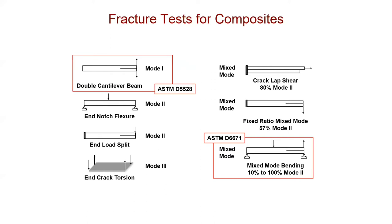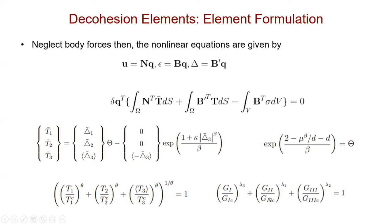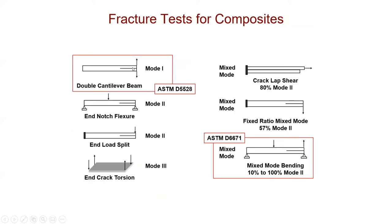To really be able to use any of this, you need G1C, G2C and G3C. You need to get these fracture toughnesses, and one way to get them is through ASTM standards. ASTM D5528 helps you measure the fracture toughness for mode one G1C using the double cantilever beam. You can also use a mixed mode fracture test called ASTM D6671 mixed mode bending test. This test allows you to vary the mode mixity, so you have some mode one and some mode two.